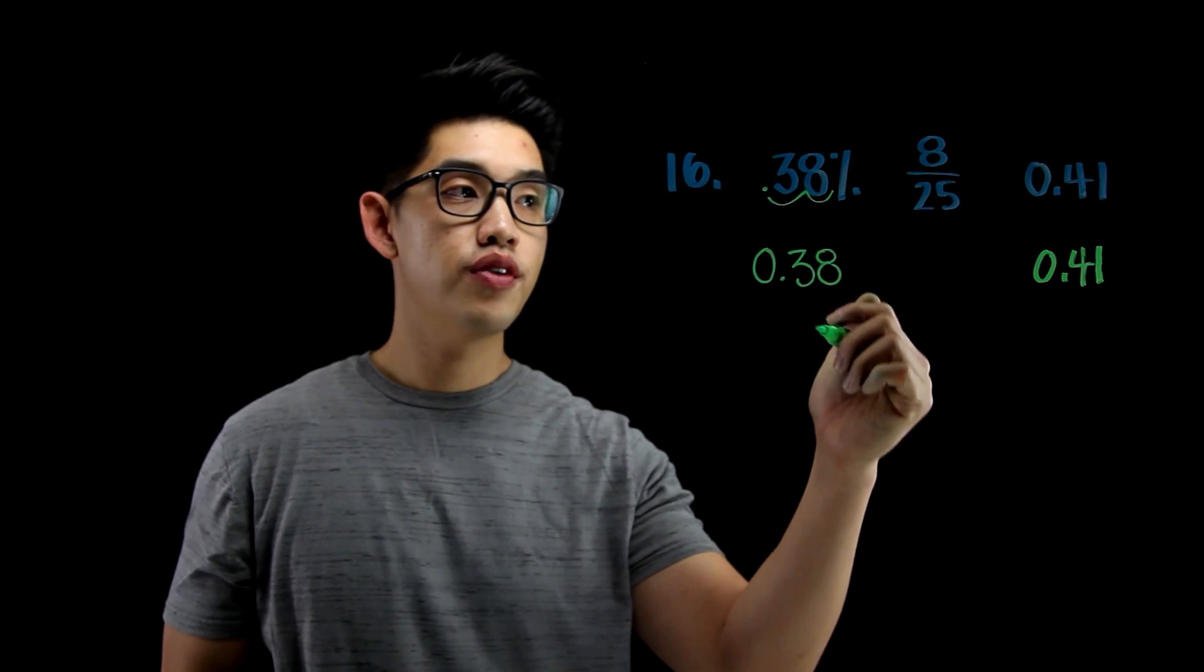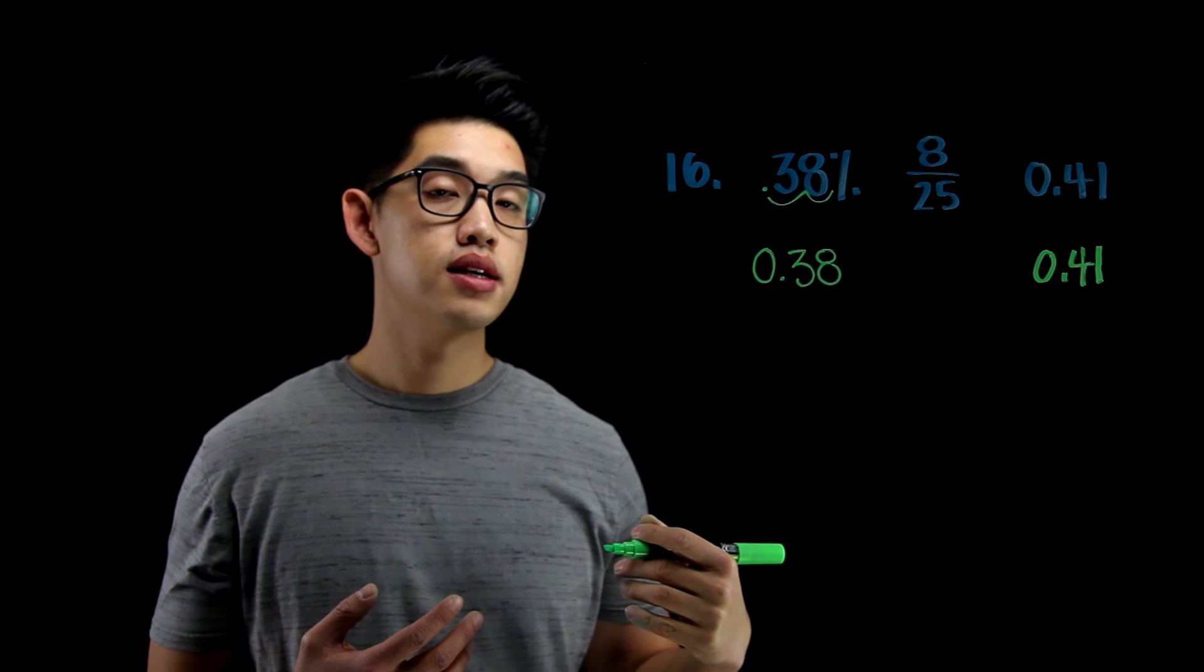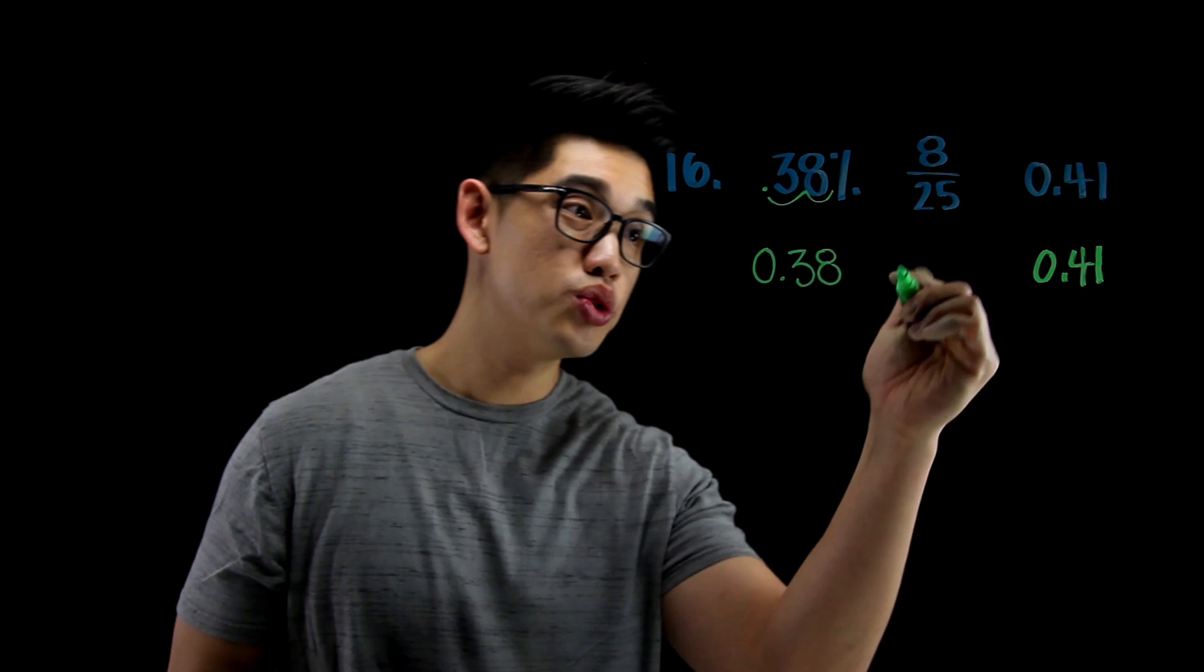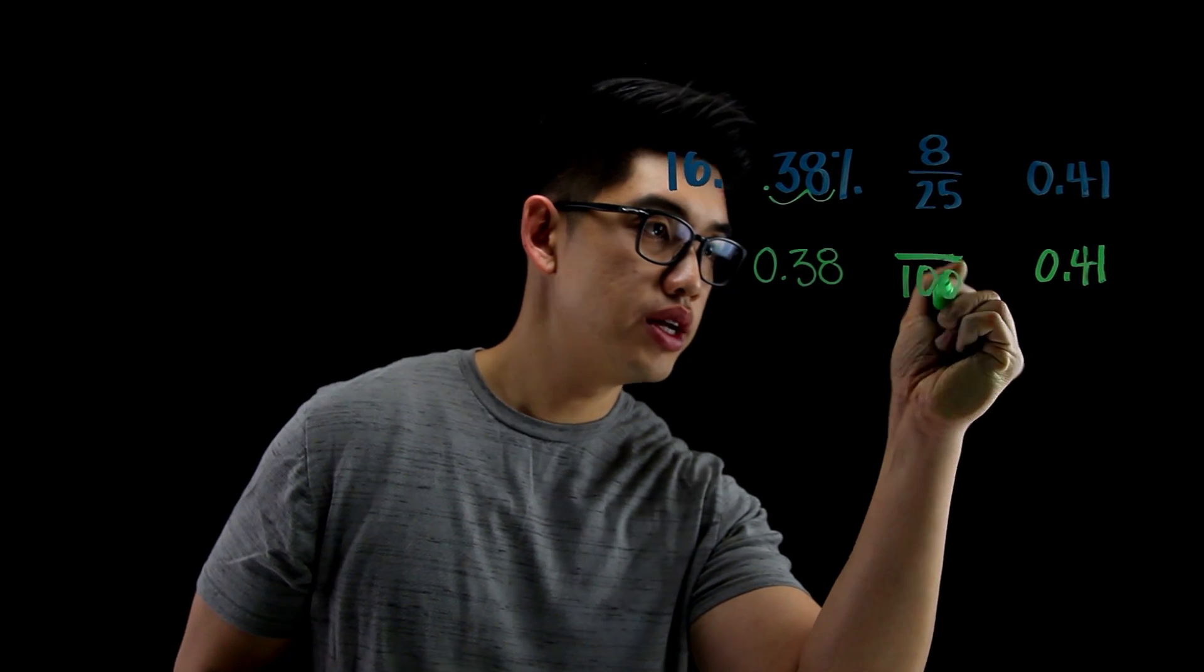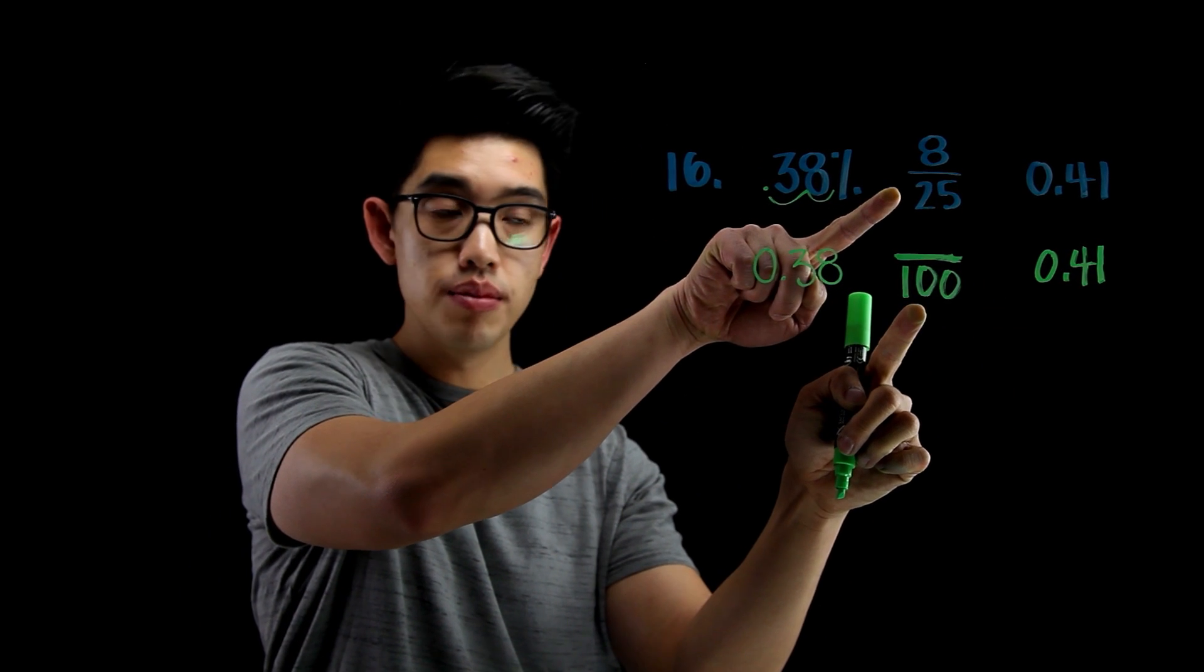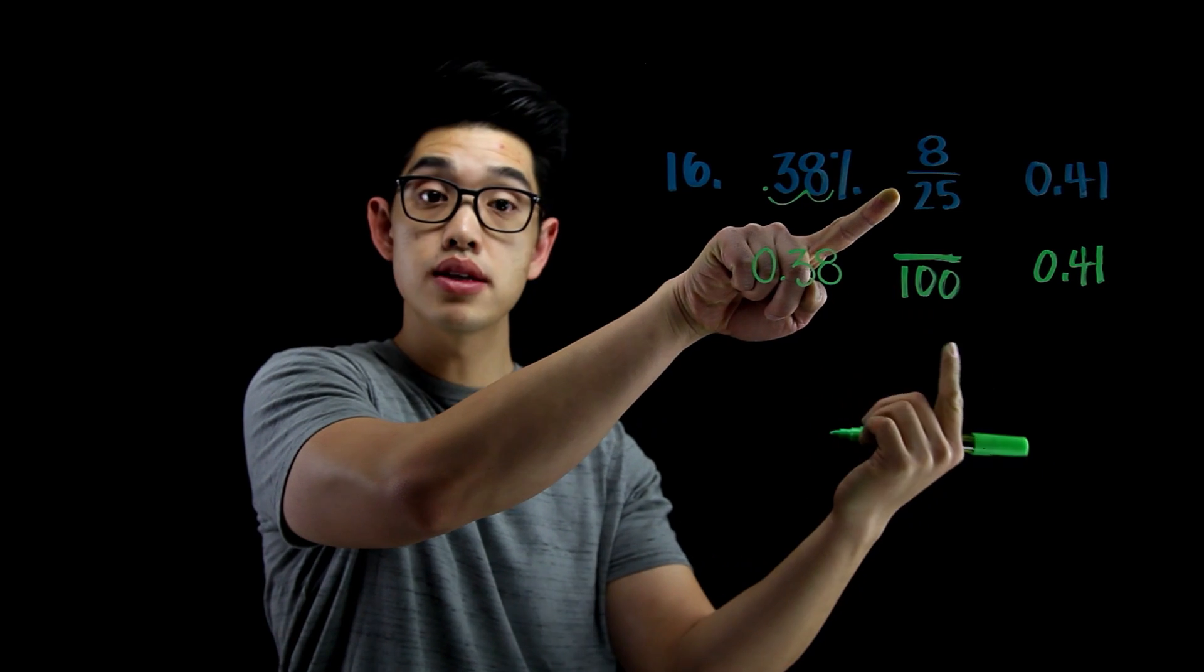It's 8 over 25. I want to make it into a fraction out of 100. I'm going to write 100 here. 25 became 100 because you multiply by 4. I want to make this equivalent, so 8 times 4, that's going to be 32.